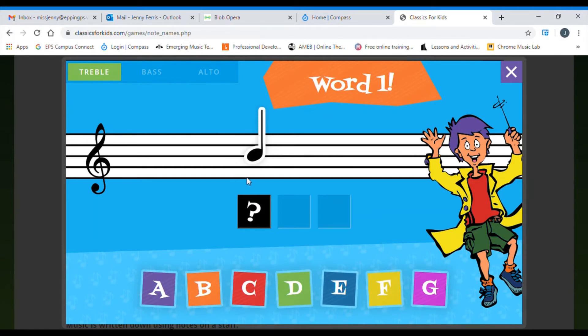The line that's going through it is the third line of the stave. One, two, three, which means Every Good Boy. Boy begins with the letter B. So we click on B, and it fills in our answer.